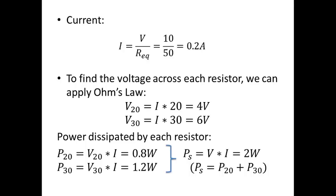We can also find the power provided by the source, PS. PS is the total power provided to the circuit by the voltage source, found by multiplying the voltage the source provides times the current it provides. The voltage is 10 volts and the total current is 0.2 amps, so PS equals 2 watt. The total power provided by the source equals the sum of the power dissipated by the 20 ohm and 30 ohm resistors, meaning all power provided is dissipated — we're neither losing nor creating energy.